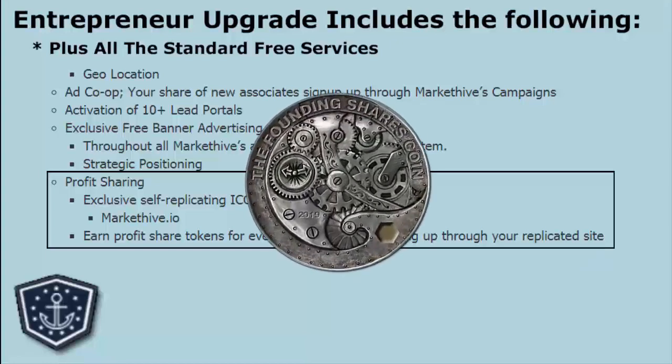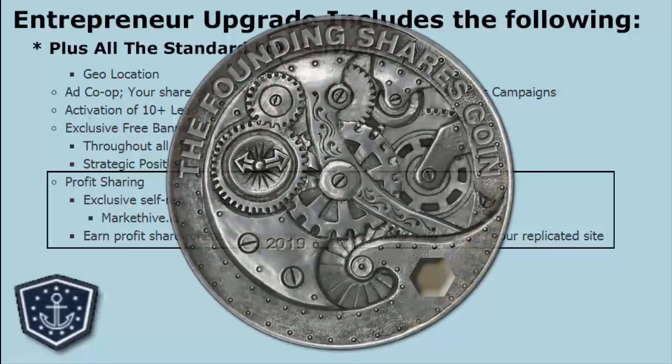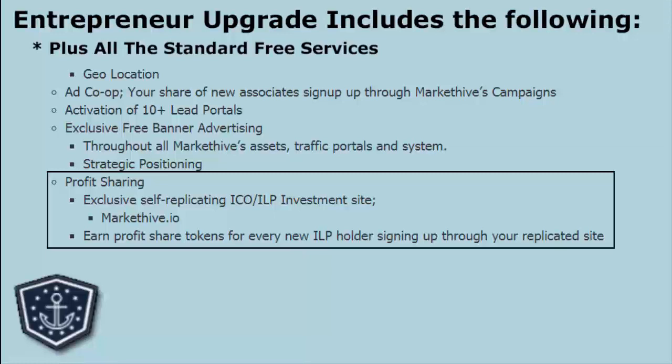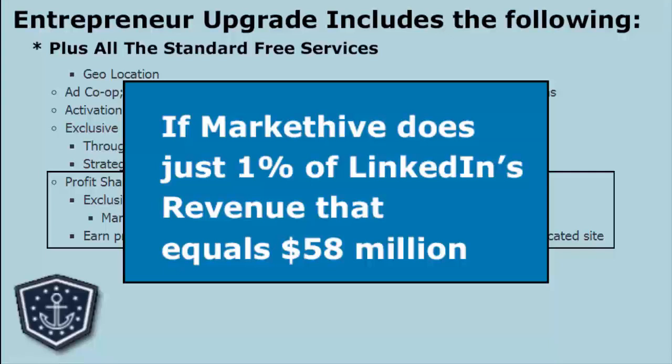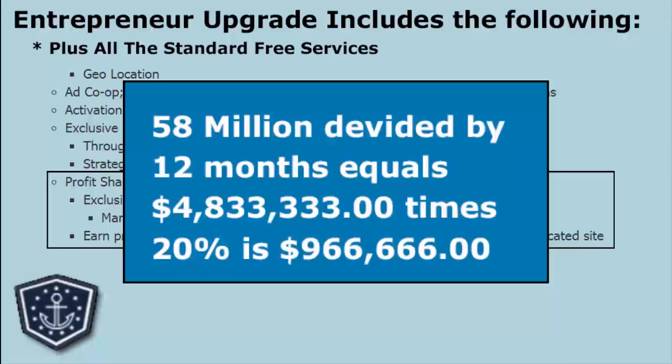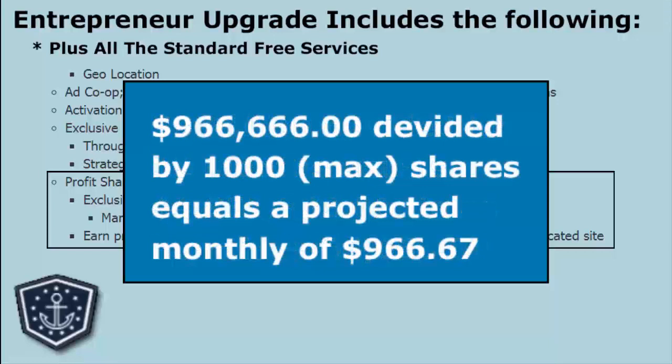We are only going to have 1,000 ILPs. An ILP is not an ICO — it's an Initial Loan Protocol. Basically you're loaning money to the company; we pay you back out of our revenue, and after the principal is paid we continue paying what we call interest for 20 years. One-tenth of an ILP is one-tenth of a share of 20% of company revenue. If we do just 1% of what LinkedIn does — they do one billion a quarter — that's ten million per month. Multiply by 20% and divide by 1,000: you're looking at $600 to $700 a month paid out on each ILP.